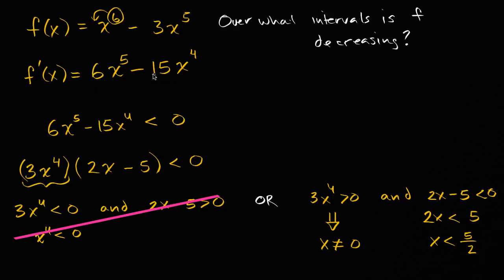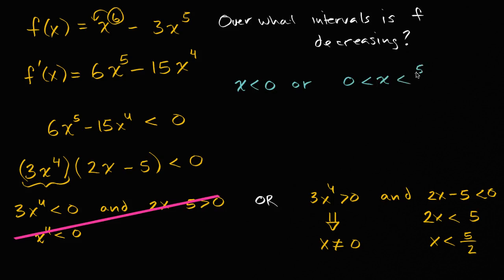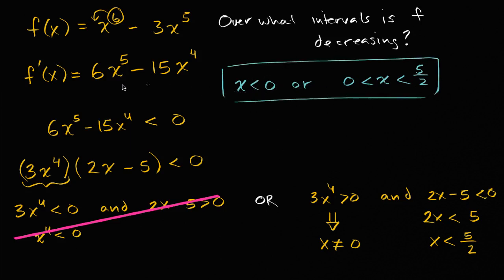So as long as x is less than five halves and x is not equal to zero, the function will be decreasing. In terms of intervals, we can say x is less than zero, or zero is less than x is less than five halves — all the negative values, excluding zero, and then going up to five halves. All I did was find when the first derivative is negative, because if the first derivative is negative, then f is decreasing as x is increasing.